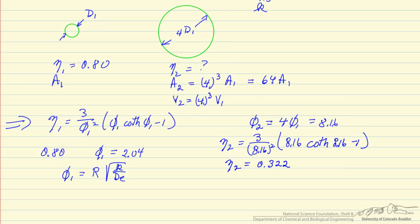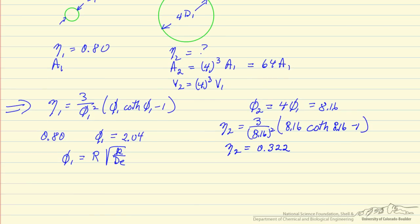So when we do this calculation we have the new effectiveness factor. You can see the catalyst is less effective because of the longer diffusion distance, and then we can determine the rate in the larger catalyst pellet over the rate in the smaller one. So it's an effectiveness factor, the rate constant, the concentration at the surface, and then the surface area.